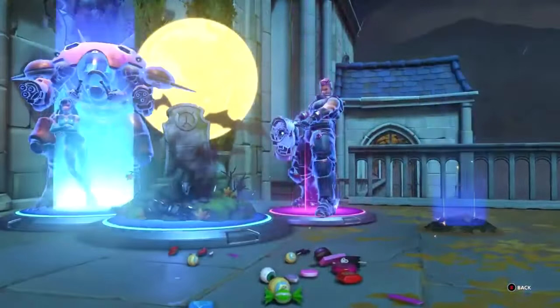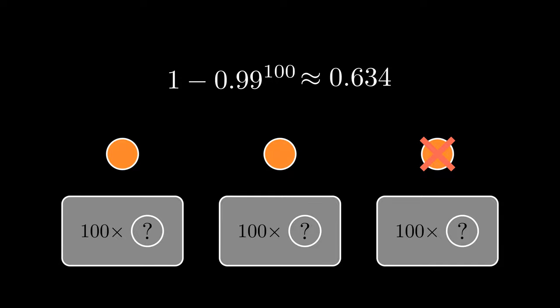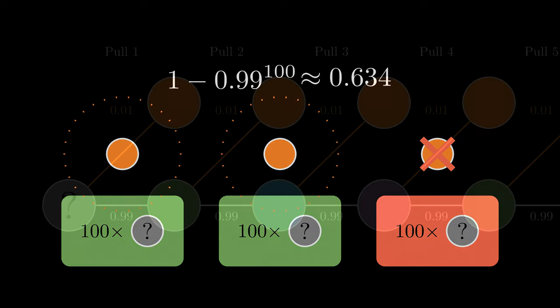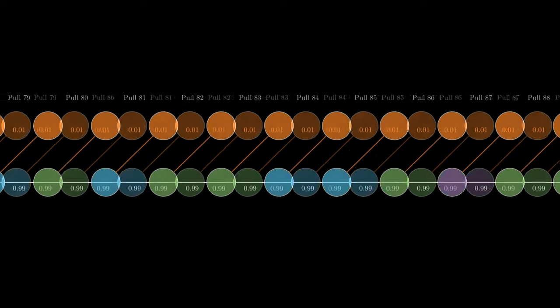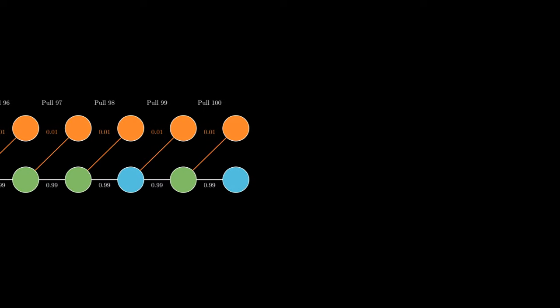So what did we learn? Firstly, that probability is a finicky thing, and oftentimes our expectations don't line up very well with reality. Next, when tackling probability and counting problems, it's important to consider whether solving for the complement would be easier than solving the original problem.